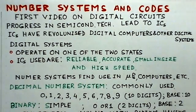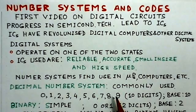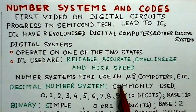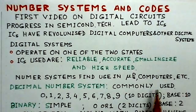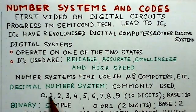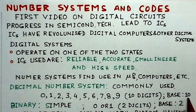Digital circuits have become more common compared to analog circuits these days. Starting with number systems — these find use in microprocessors, computers, etc. The most common number system is the decimal number system, which has digits from 0 to 9. There are 10 digits including 0, so it is said to have a base of 10.